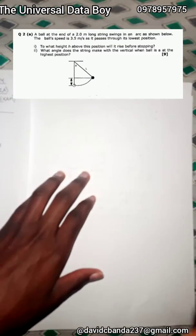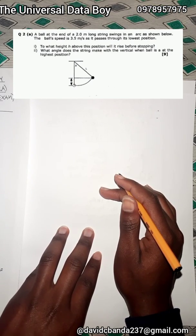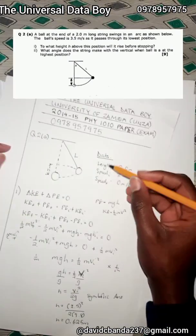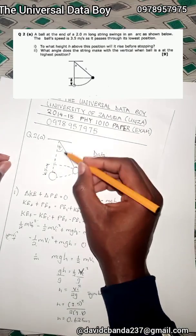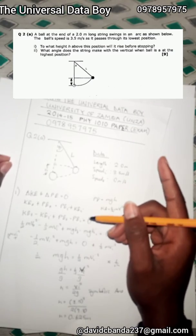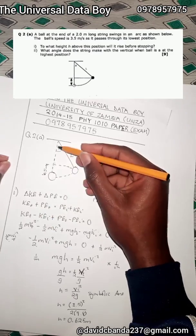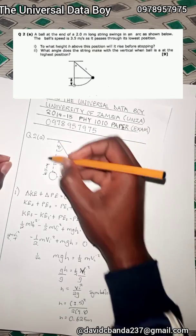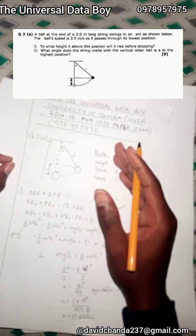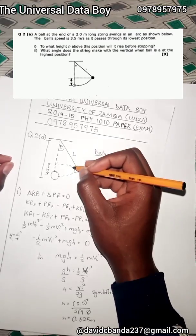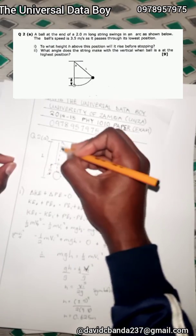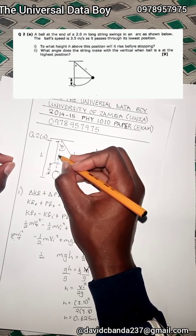For roman numeral two, we need to find the angle the string makes with the vertical. Going back to our diagram, we have theta here that we need to find. We've found h; now we need another side. The length of the pendulum doesn't change — it's the same whether the string is at the bottom or the side, so that length is still l. This means the vertical distance from the pivot to the ball's highest point must be l minus h.